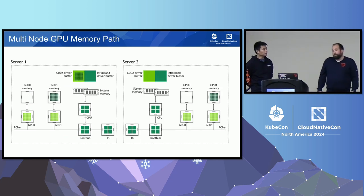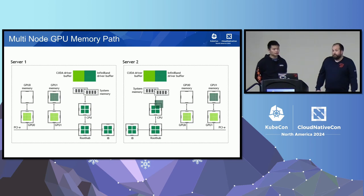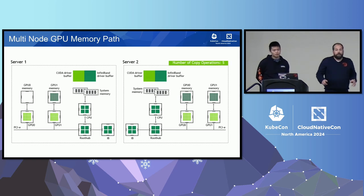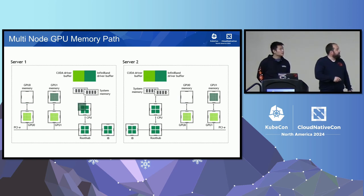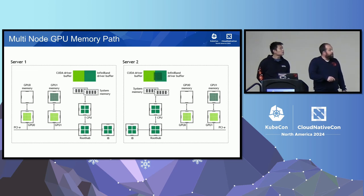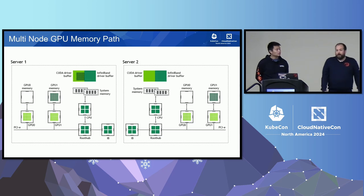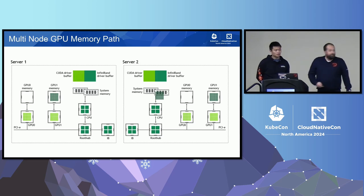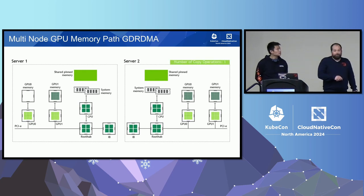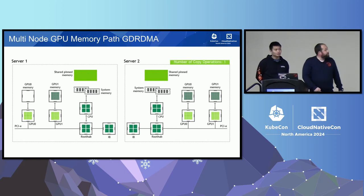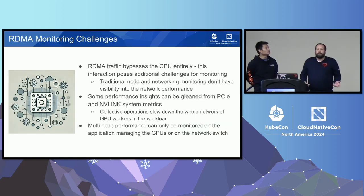Big kudos to our partners at NVIDIA for providing these crisp representations of GPU data paths. In the traditional GPU flow, GPU memory on server one has to go through the CUDA driver buffer, InfiniBand driver buffer on server one, InfiniBand CUDA driver buffer on server two, traversing system and CPU memory on both, until it gets to GPU two on server two — five copies within that operation. With RDMA, it goes right past CPU and system memory — GPU Direct — but this also poses additional complexities and challenges. RDMA traffic bypasses the CPU entirely, meaning traditional node and network monitoring tools do not have visibility at all. You can't Wireshark this traffic.